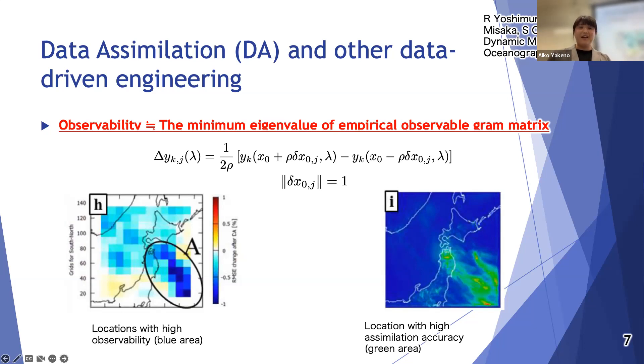Here we assume observability is calculated by the minimum eigenvalue of the empirical observable Gramian matrix and identify the location with the smallest eigenvalue. These figures show the location with high observability as blue area. The white figure shows the location with high assimilation accuracy. We see they are highly correlated with each other.